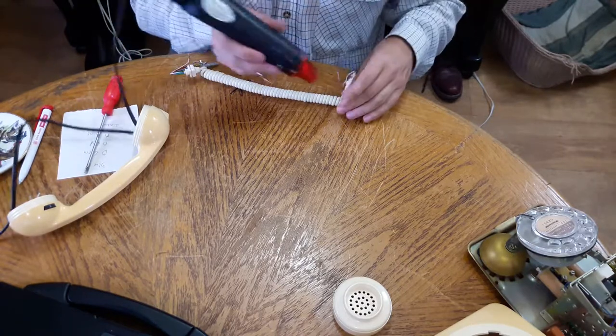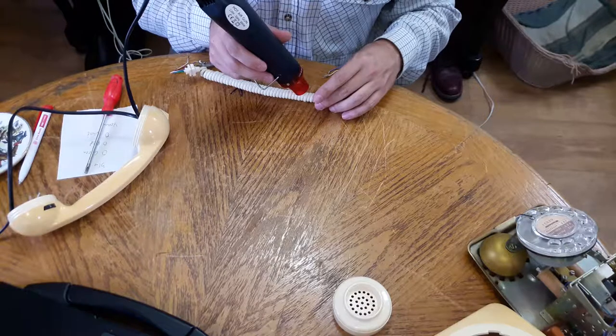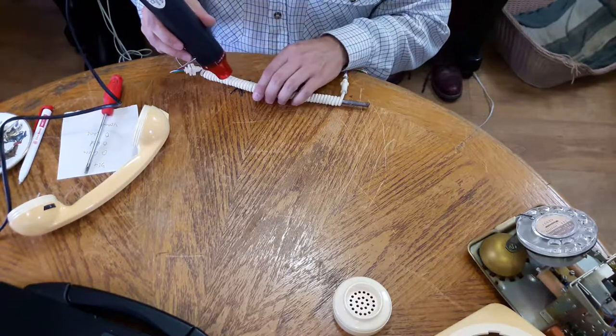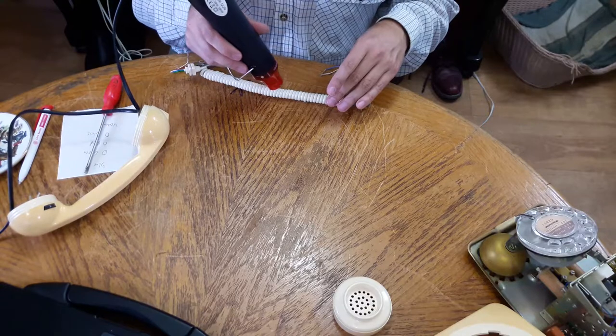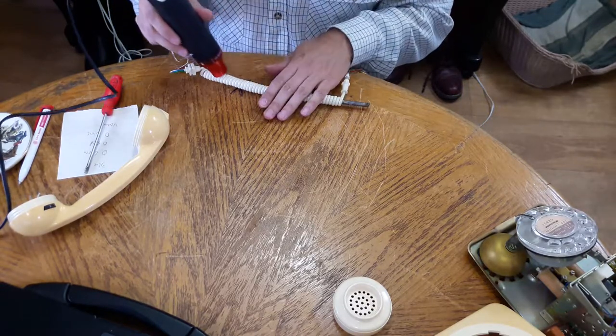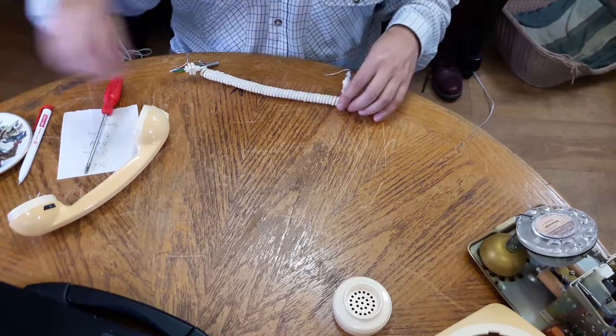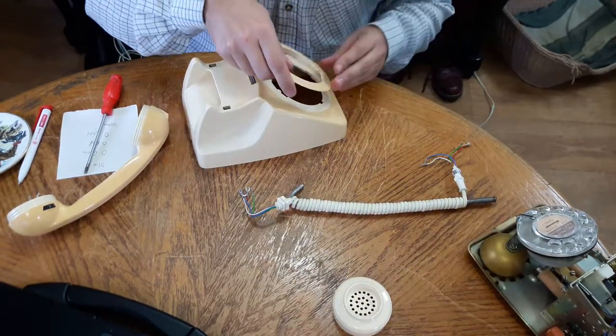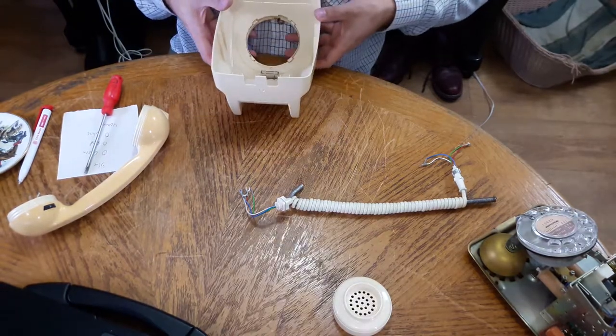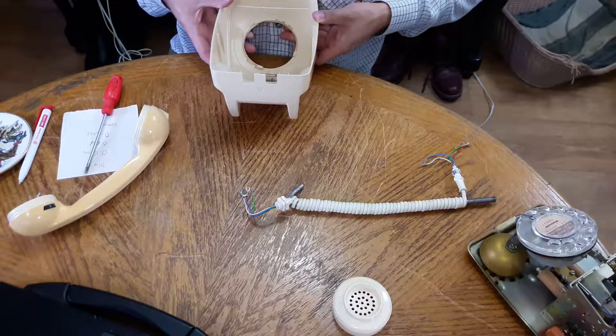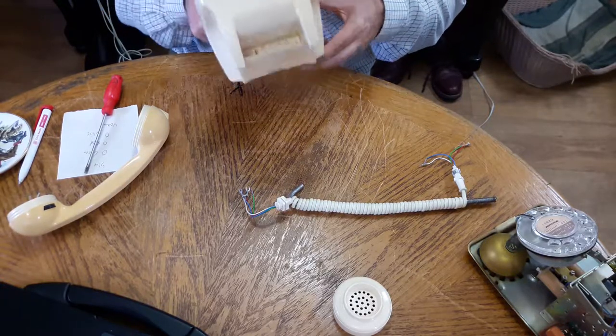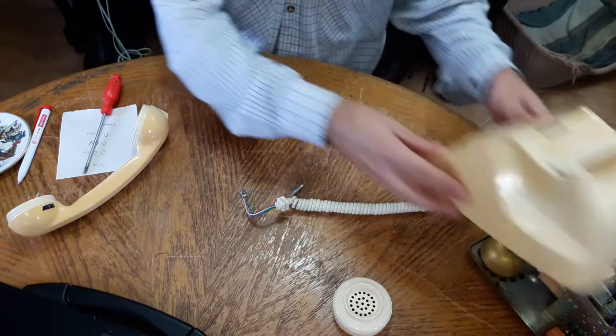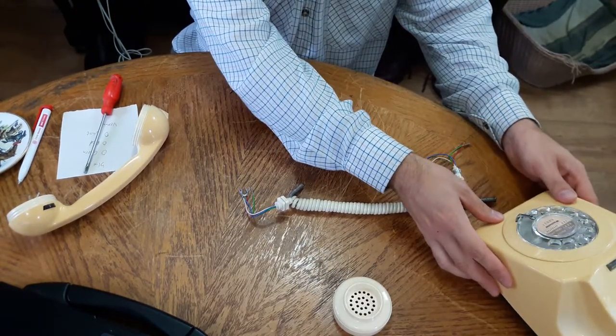I'll flip it over. That's got that nice and hot now so we'll just leave that to cool. The next thing we can do is put this bezel round. You line these notches up and twist it round. The bezel will line up the slot where the finger stop goes.